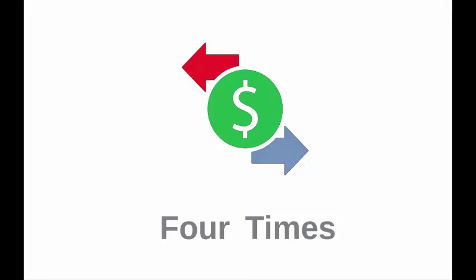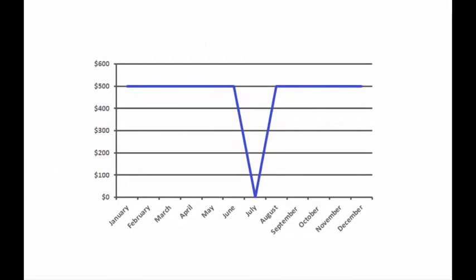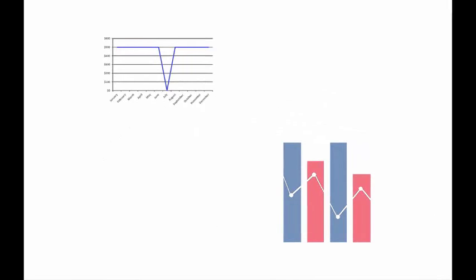Today, most policies and products are built on the idea of steady incomes and infrequent large emergencies. In the US Financial Diaries, we see volatile incomes and smaller but frequent needs to draw on savings.